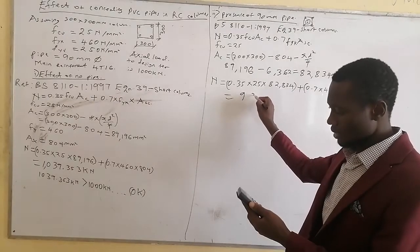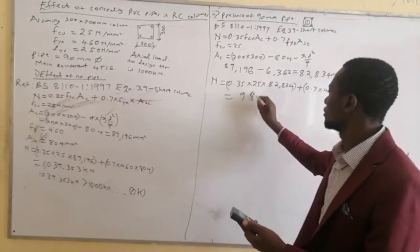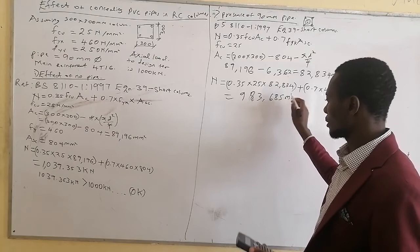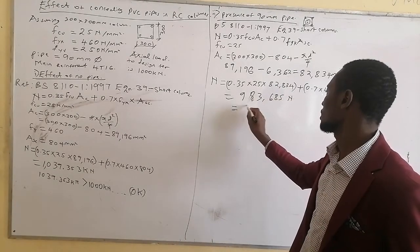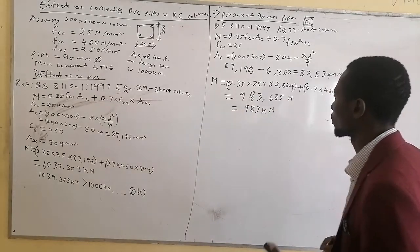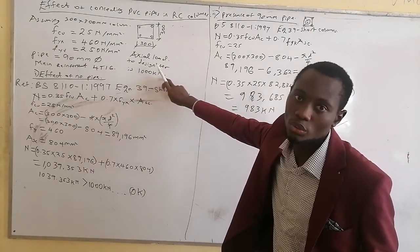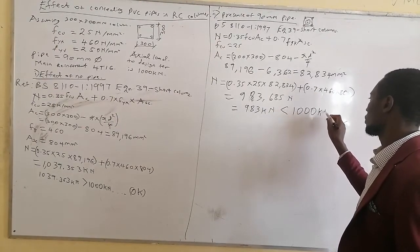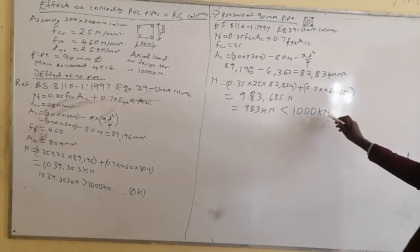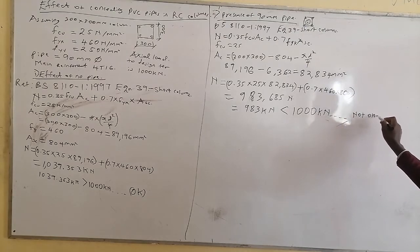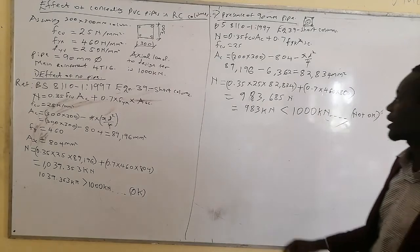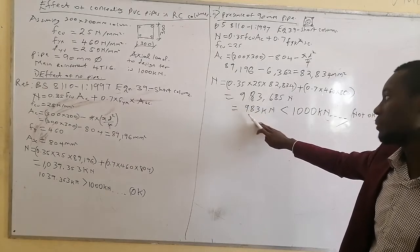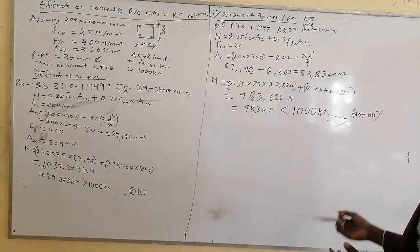Therefore we get approximately 983 kilo-newtons. But we have seen that the design load is 1,000 kilo-newtons. Therefore this result is less than 1,000 kilo-newtons — the column is not okay. The actual load that can be carried by our column is less than what we wanted to carry. Therefore, what should we do?